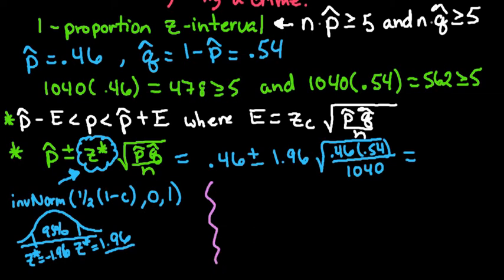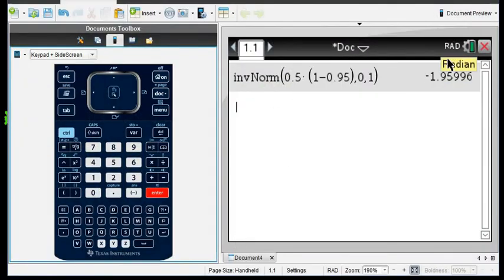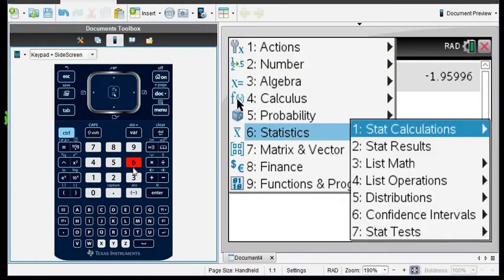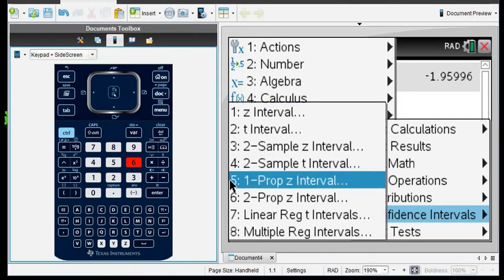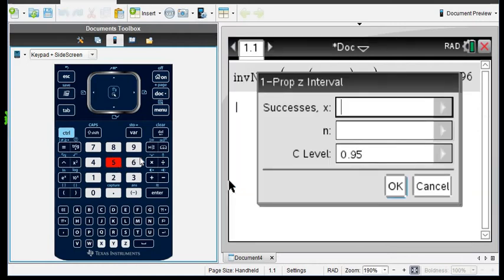In order to run this in our calculator, I'm going to go to my calculator. This I just found because I needed to show work. I'm going to go to menu, and I'm going to go to statistics, and I'm going to choose option 6, confidence intervals. It's important to know the name of your interval because there's a lot that show up, so we're going to choose option 5, the 1 proportion z interval.